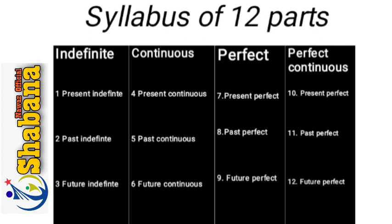And then we will come to continuous tense: present continuous tense, past continuous tense, future continuous tense. And then present perfect tense, past perfect tense, future perfect tense, and then perfect continuous tense — present perfect continuous tense, past perfect continuous tense, future perfect continuous tense.